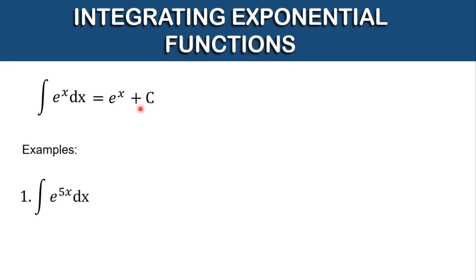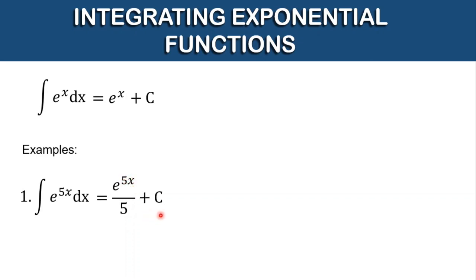Number 1. What is the antiderivative of e raised to 5x dx? The antiderivative is itself divided by the derivative of the exponent. We have e raised to 5x divided by 5, which is the derivative of the exponent, plus c. And this is the antiderivative of our given.